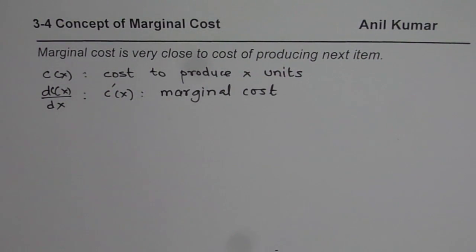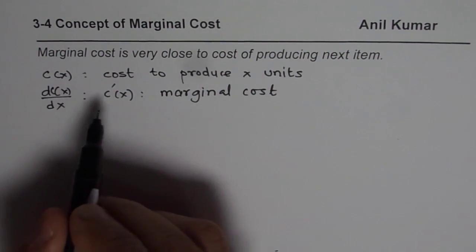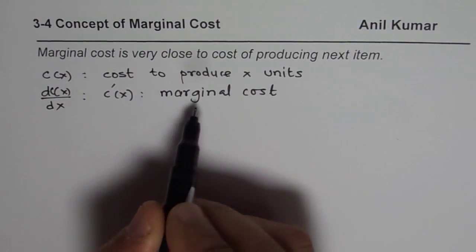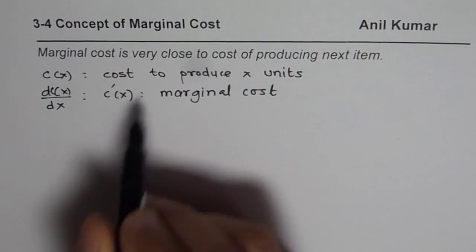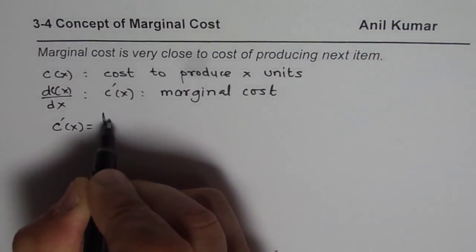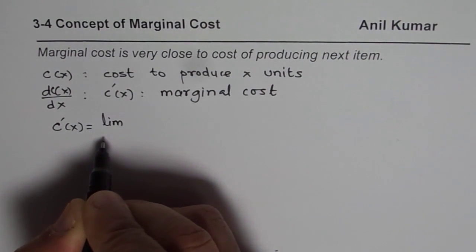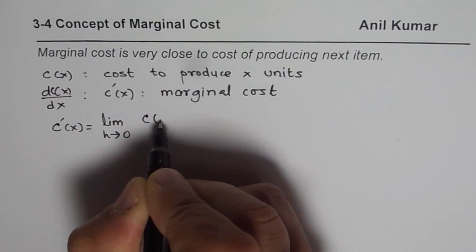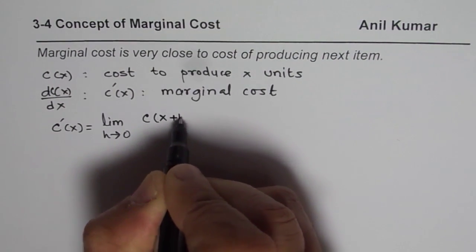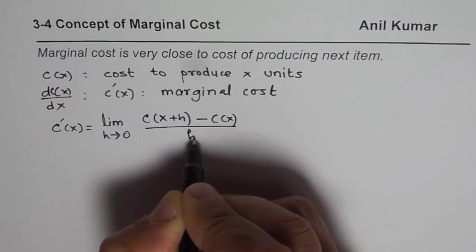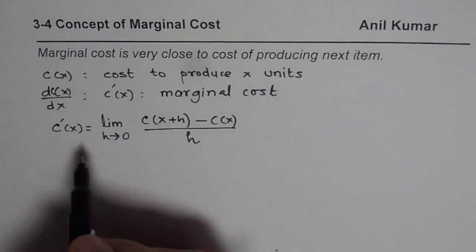But here let us understand what does it mean. When we say that the derivative of the cost function with X units produced is the marginal cost, it really means that C prime of X in the form of limits will be: limit as H approaches 0 of the cost of producing X plus H items minus C of X, over H. So that is the basic definition of marginal cost.